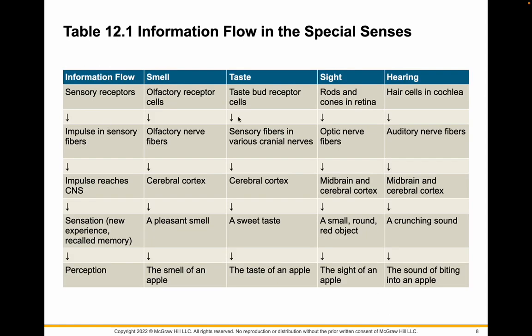Here is information flow in special senses — we are going to focus on sight. Light is going to hit the rods and cones in your retina. These are the unique sensory receptors that send information through the optic nerve fibers to the midbrain and cerebral cortex. And then you think, 'Oh, that's an apple.'